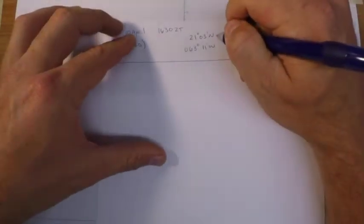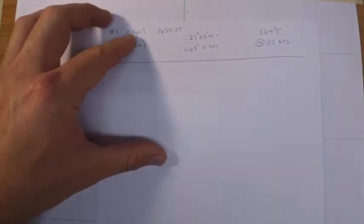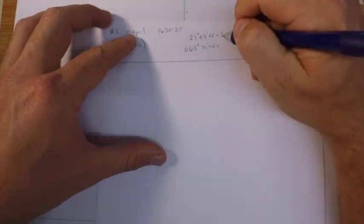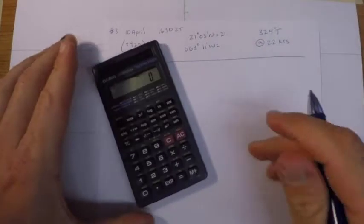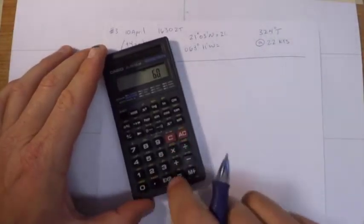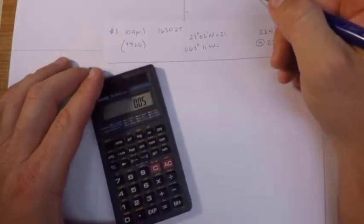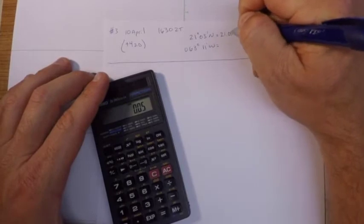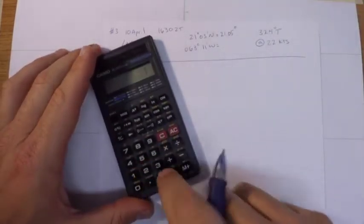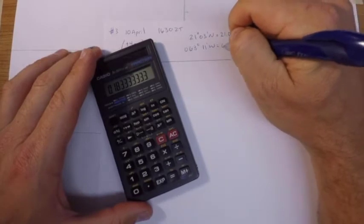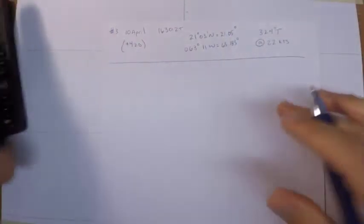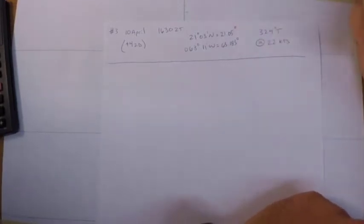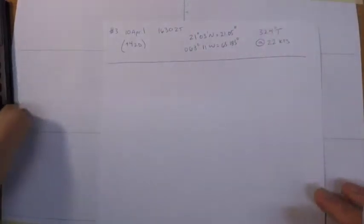So I've set up this worksheet for this problem: 10th of April, 1630, here's our position and our course and speed. First thing I like to do in problems like this is convert my latitude and longitude into decimal degrees. So three minutes is equal to zero point five, and 11 is equal to 63.183 degrees. I usually have success with two to three decimal places, but you can use as many as you want to get the right answer.